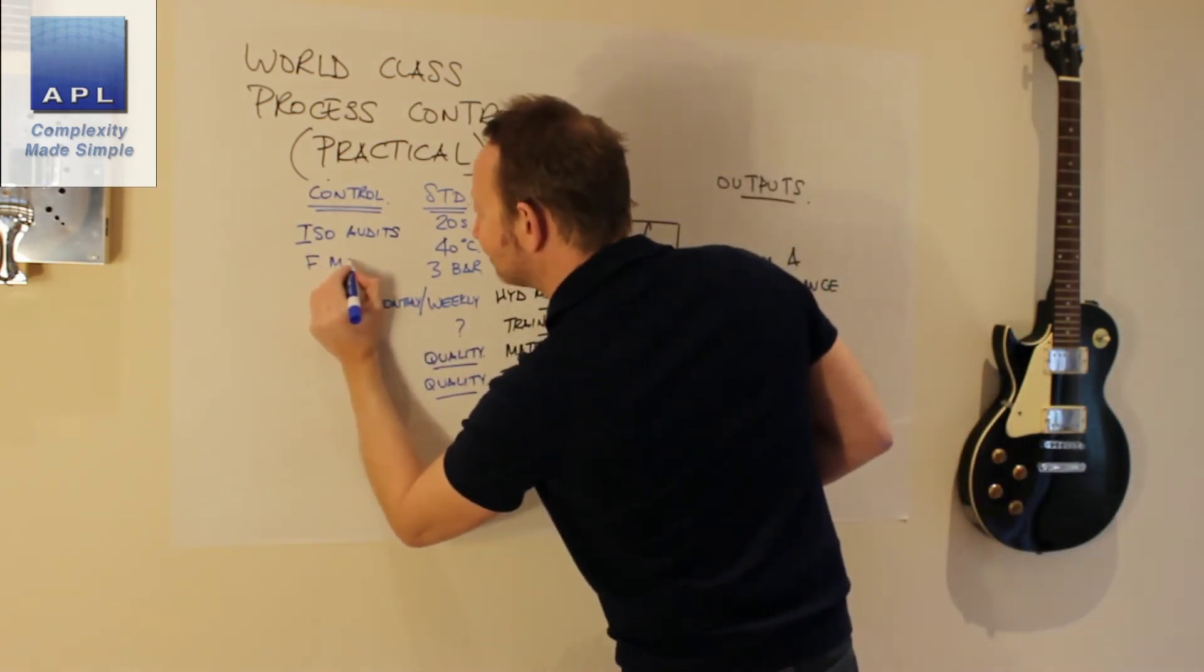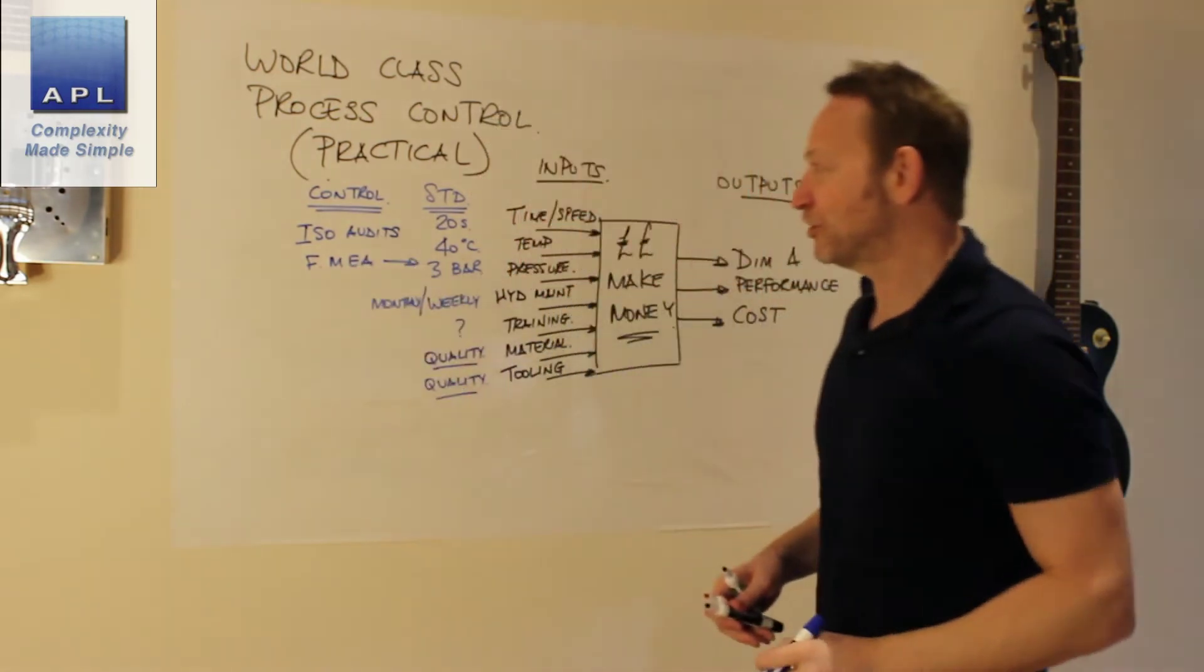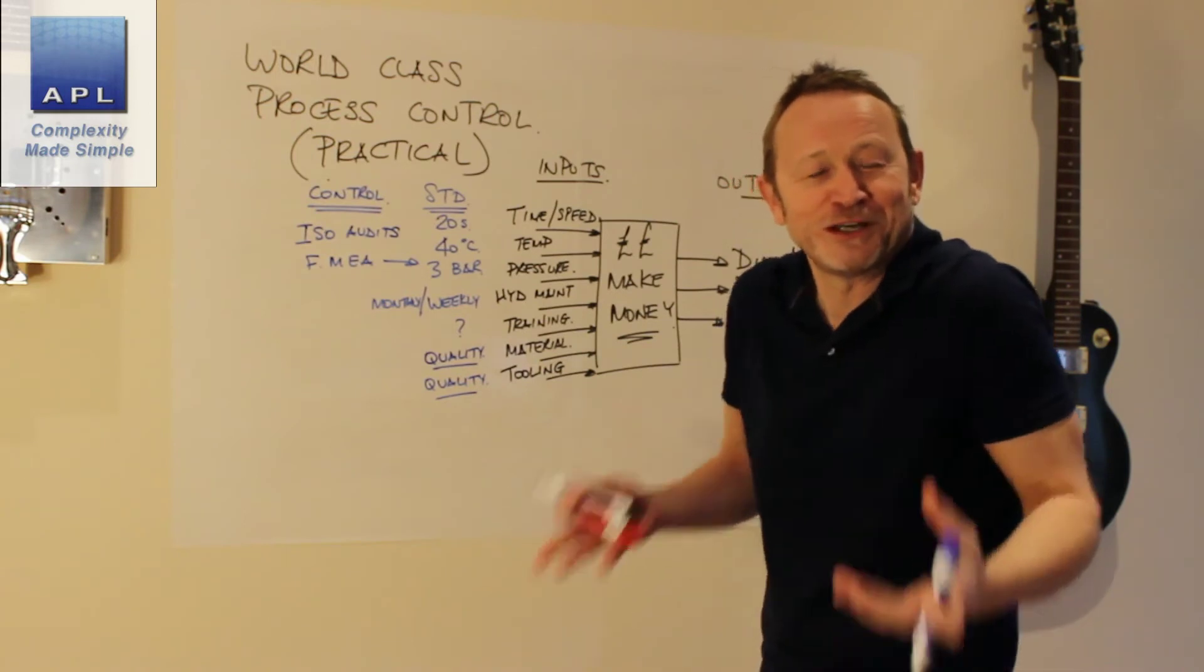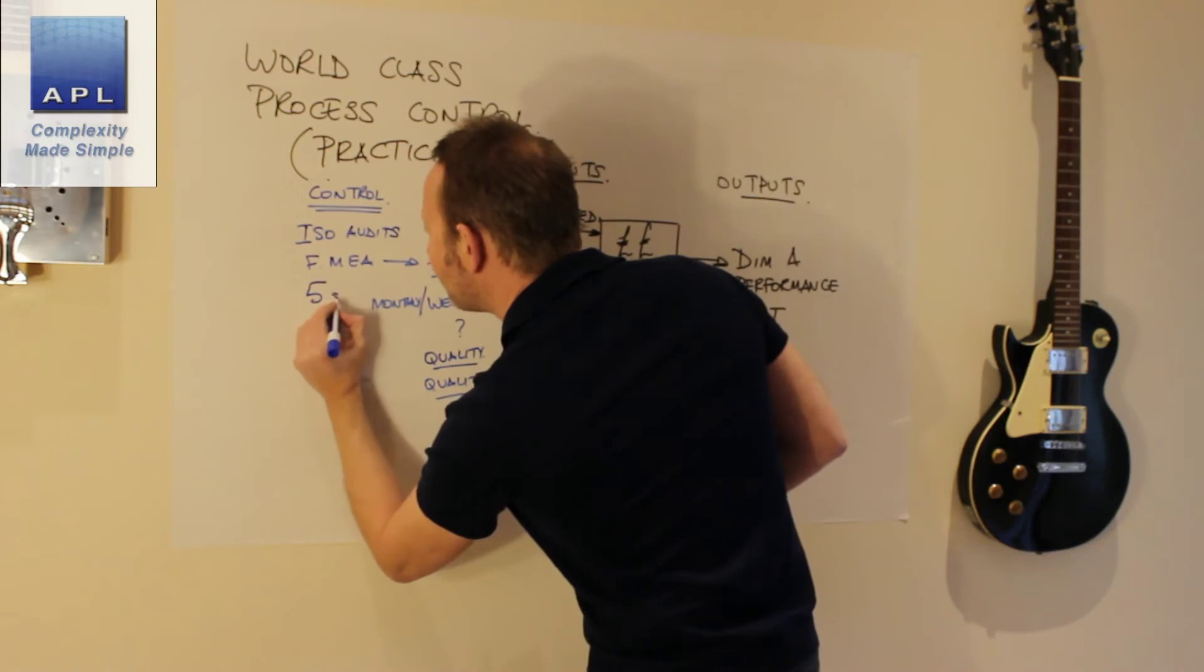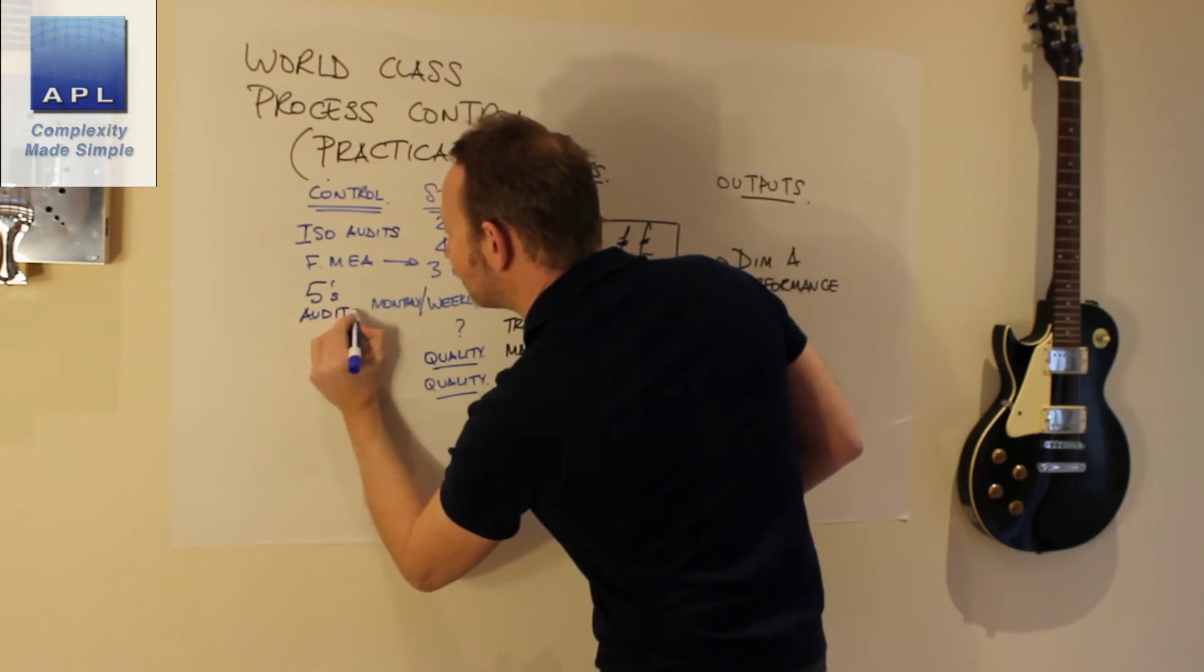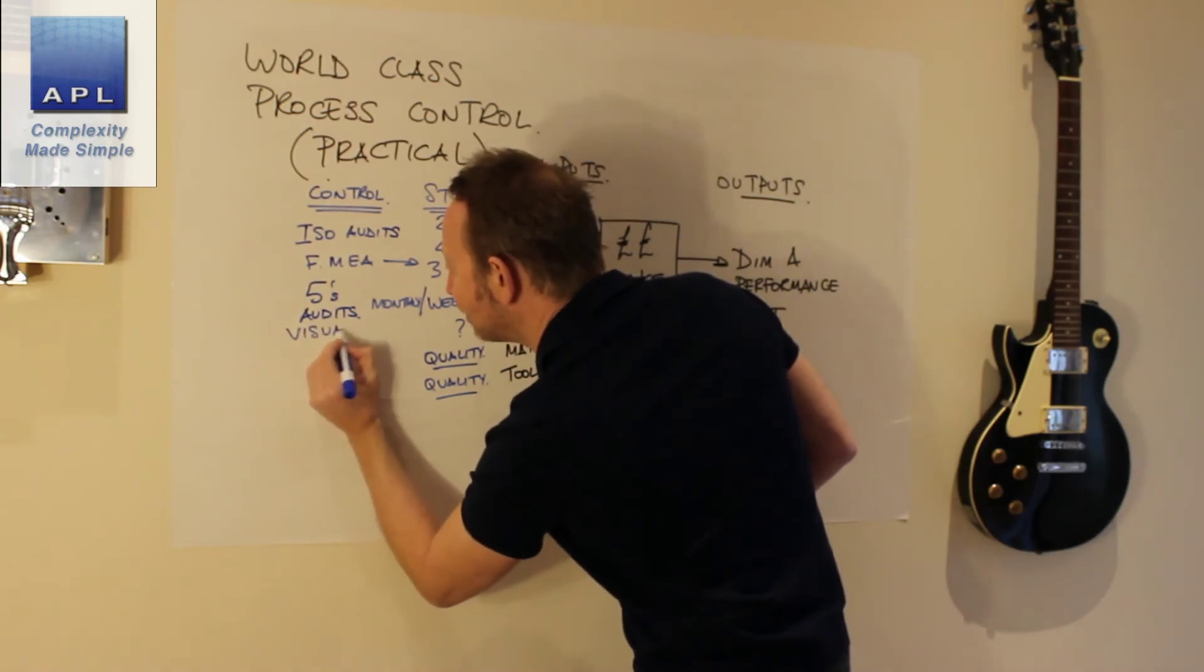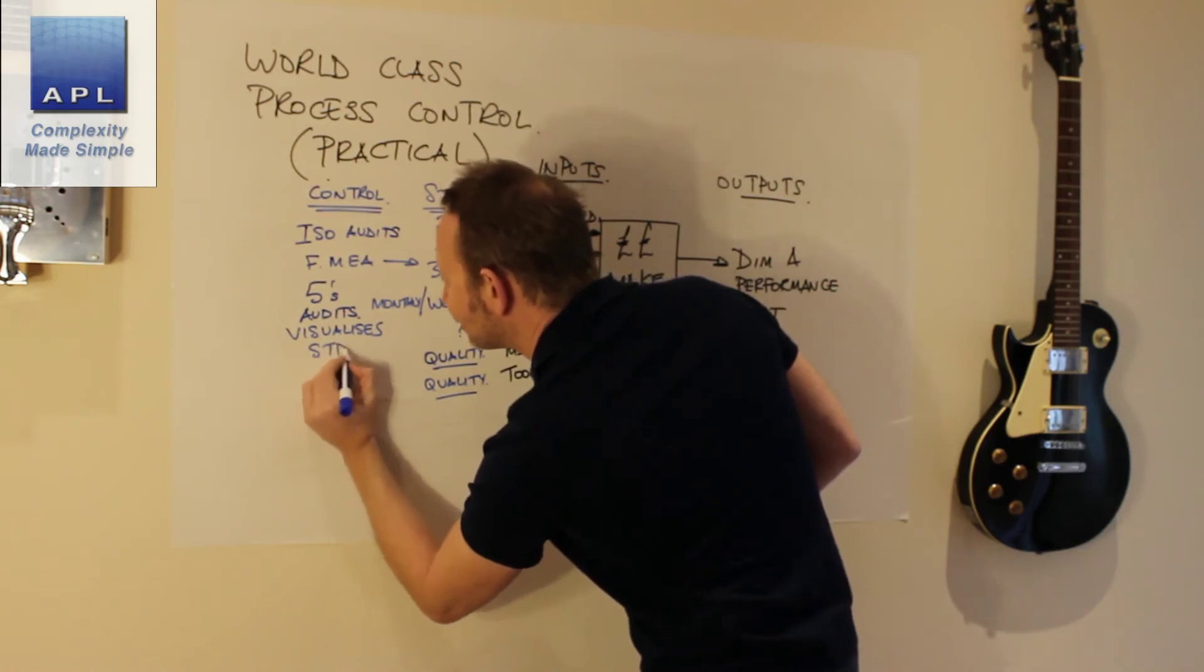They'll use FMEA to initially design these controls. Why would you do FMEA? Well, you do it to make money. Why would you do it for any other reason? What else will they do here? 5S. What will they use 5S for? 5S audits. They'll be checking that these things are done.